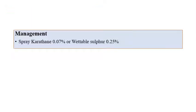For management, spraying Karatine 0.07% or wettable sulfur 0.25% can be recommended. Karatine contains the fungicide tridemorph, and the trade name is Calyxin, along with triadimefon which is considered a rescue treatment fungicide. For most powdery mildews, tridemorph sold as Calyxin can be recommended.